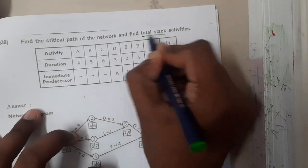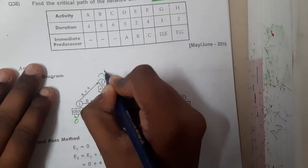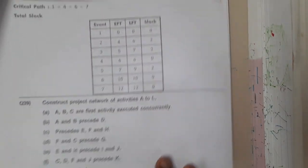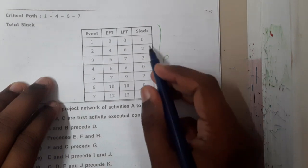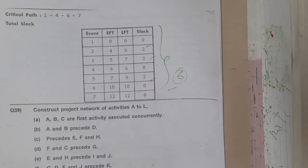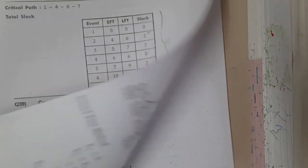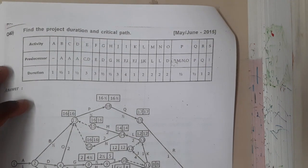Sometimes the exam asks about slack. Total slack is the difference between the forward and backward values at each node. For example, differences of zero, two, two, zero, two, zero give a total slack of six when summed. The table you draw showing these differences is the slack table. In this way, the slack value comes out to six.